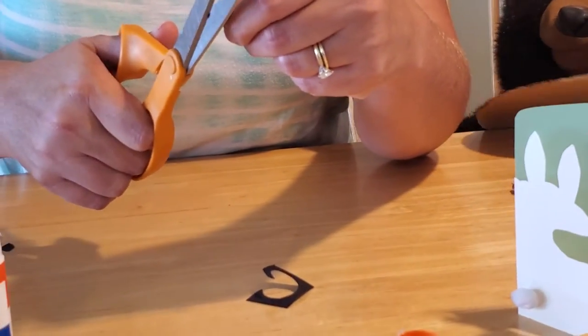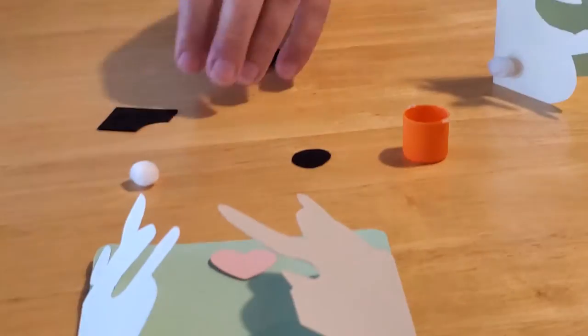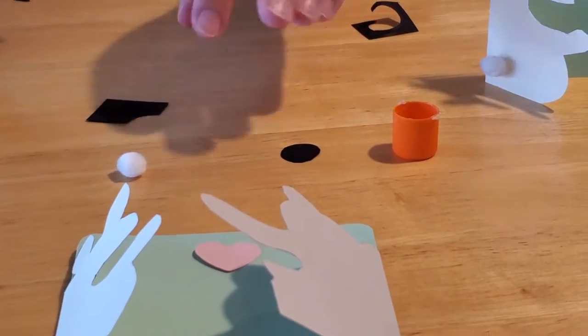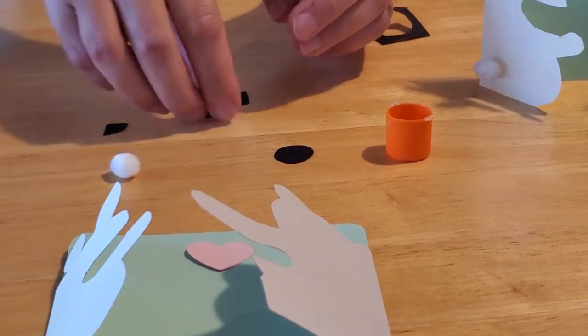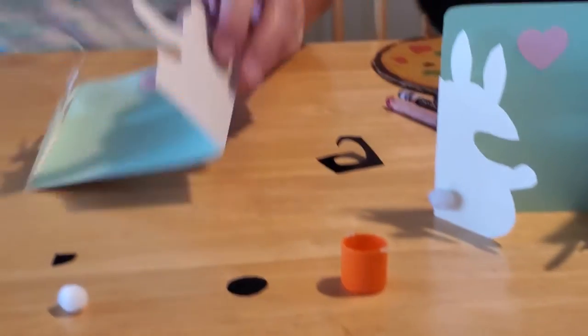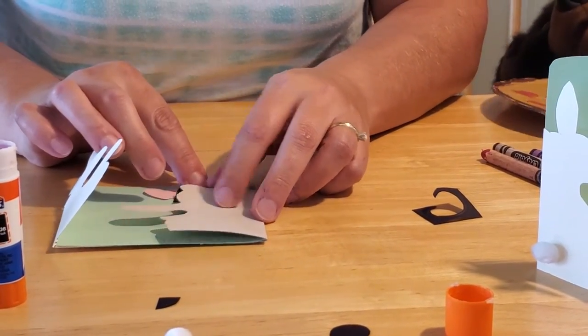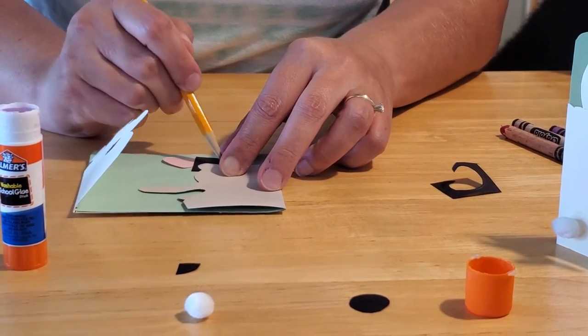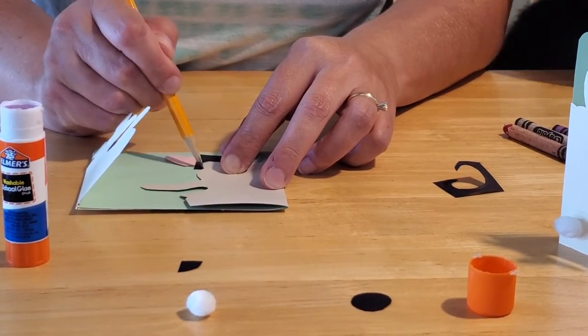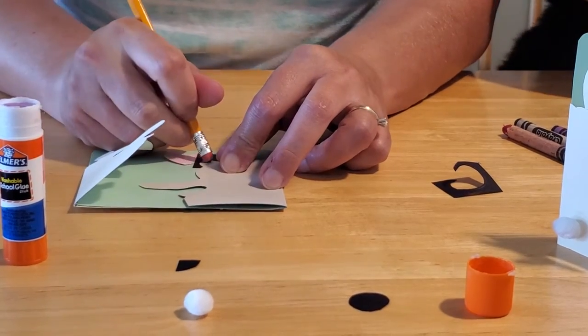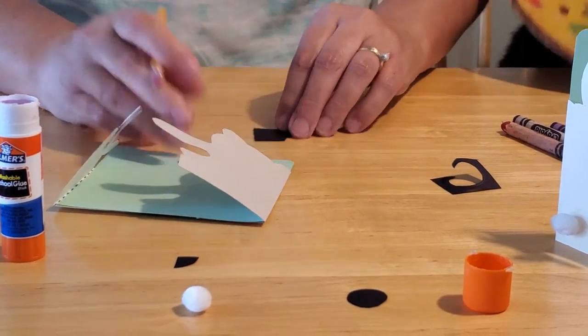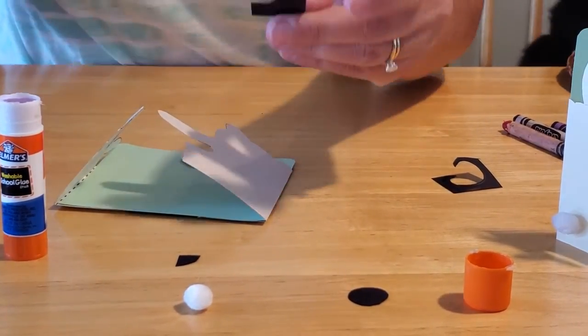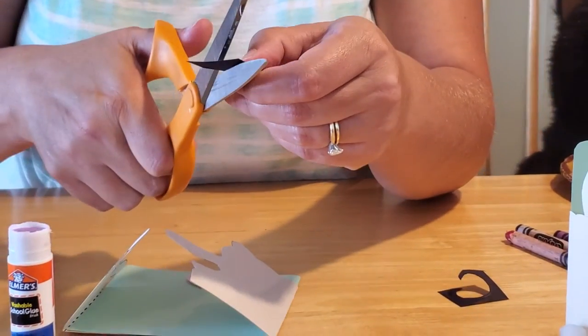So there's his tail. And then for his ears, I already cut one out. The other one, we simply took and we traced the shape of the ear on the black paper like so. And I'll just erase my little mark there. And then on the black paper we cut out the tracing that we made.